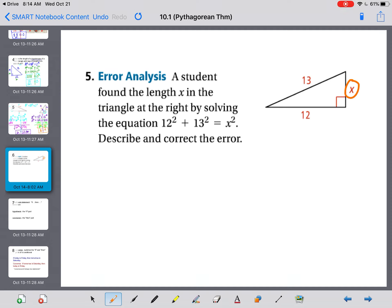A student found the length X in the triangle at the right by solving the equation 12 squared plus 13 squared equals X squared. Describe and correct the error. What did they do wrong when they set this up? If our formula is A squared plus B squared equals C squared. It might help if we label all the parts first. 13 is the one directly across from the 90 degree angle, so that's our hypotenuse, which is always letter C. And then this could be A and this could be B or the other way around.